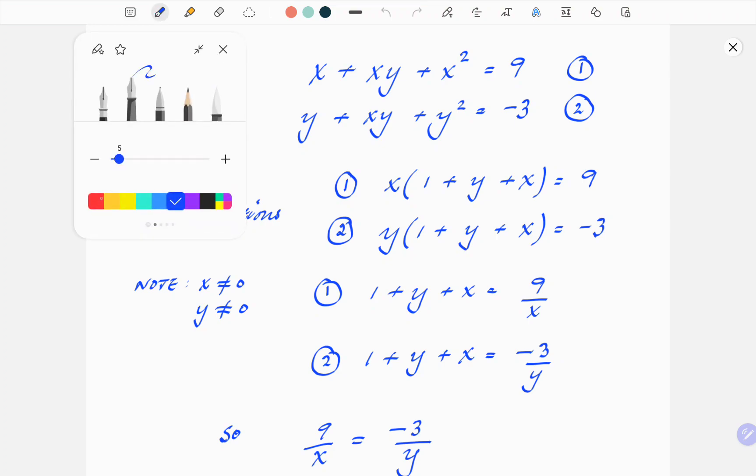So you've got basically two simultaneous equations. The first one, x plus xy plus x squared equals 9, equation 1. And the second one, y plus xy plus y squared equals minus 3, equation 2.